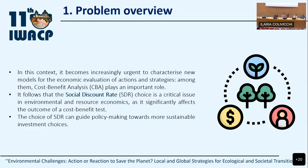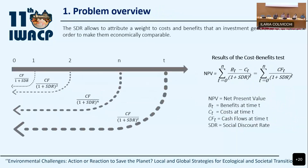A critical issue is the choice of a social discount rate, because it is a parameter of cost-benefit analysis that significantly affects the outcome of a cost-benefit test. The choice of a social discount rate can guide policy-making towards more sustainable investment choices. The social discount rate allows us to attribute a weight to costs and benefits that an investment generates over time, in order to make costs and benefits comparable from an economic point of view.